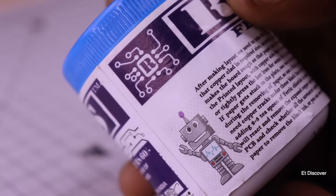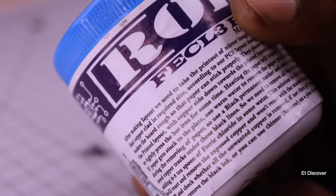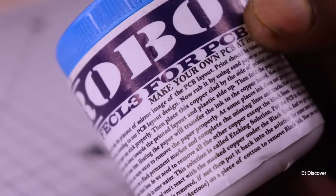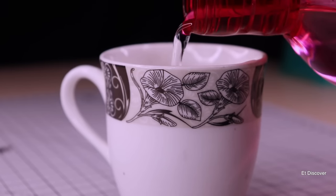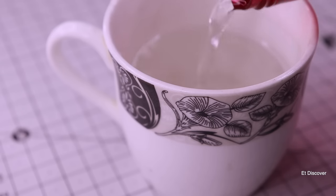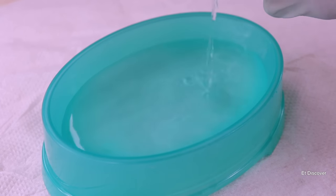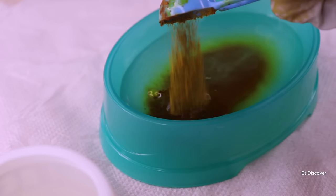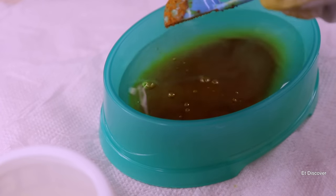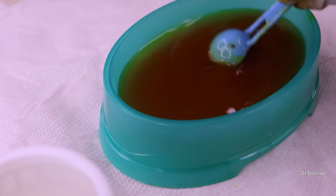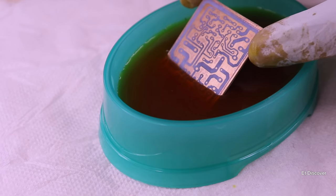For etching process I am going to use ferric chloride acid here, which is very popular for making PCB. Here I will pour half the water into a cup and put it back in the previous container. Then I need to mix three spoons of ferric chloride acid in this water. When it is completely mixed, I will dip the PCB into the ferric chloride acid.